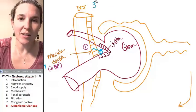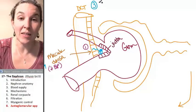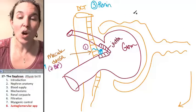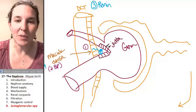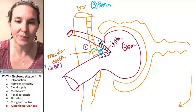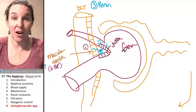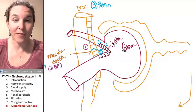Juxtaglomerular cells produce a substance called renin. Renin is dumped into the blood. Juxtaglomerular cells busted it out and barfed it into the blood.